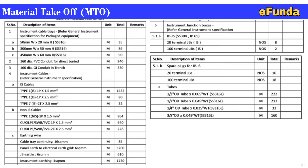Similarly, pair plugs for JB IS: 20-terminal JB requires 16 numbers; 100-terminal JB requires 18 numbers. For tubes: half-inch OD tube with 0.065-inch wall thickness SS316L requires 222 meters; half-inch OD tube with 0.049-inch wall thickness requires 212 meters; quarter-inch OD tube with 0.035-inch wall thickness requires 33 meters; and 3/8-inch OD with 0.049-inch wall thickness requires 160 meters. This is how the MTO consists of material descriptions, their sizes, required units, and quantities.